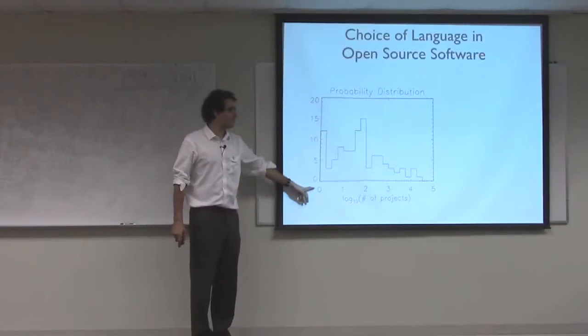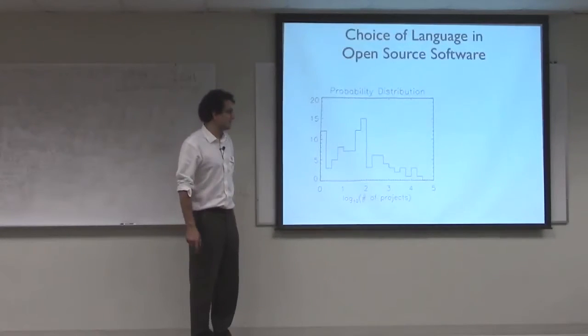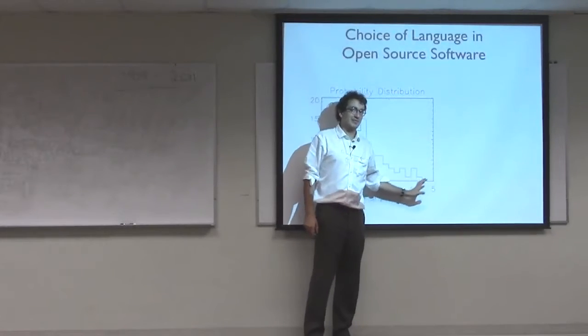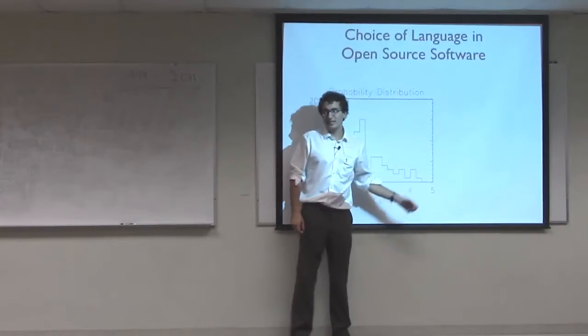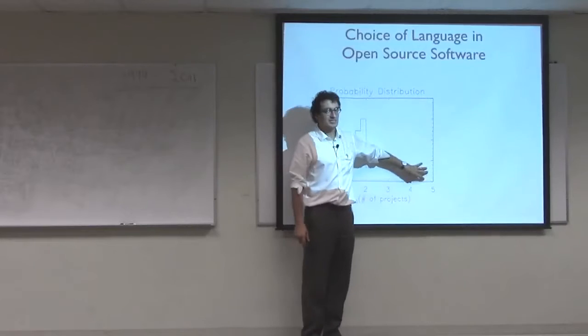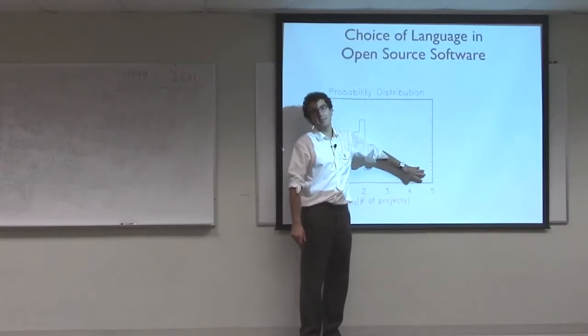These languages are extremely rare, in other words, in the open source movement. Conversely, on the other end of this logarithmic scale here, at four, so ten to the four, that's ten thousand, we see there's a small number of extremely popular languages.